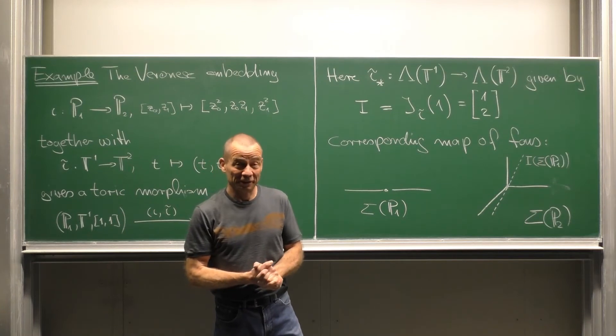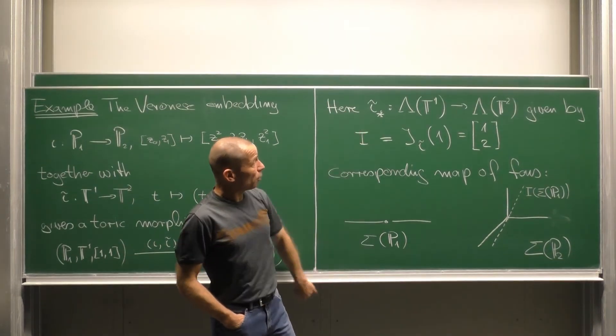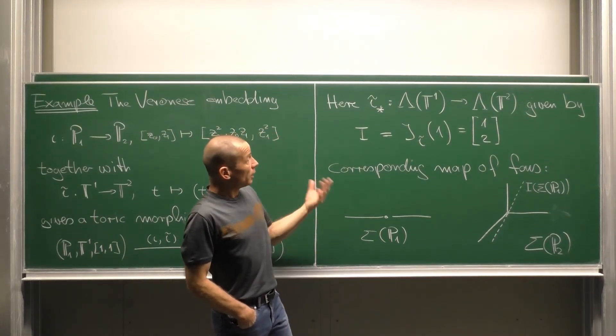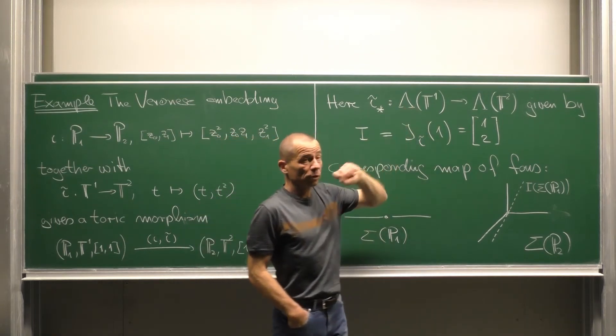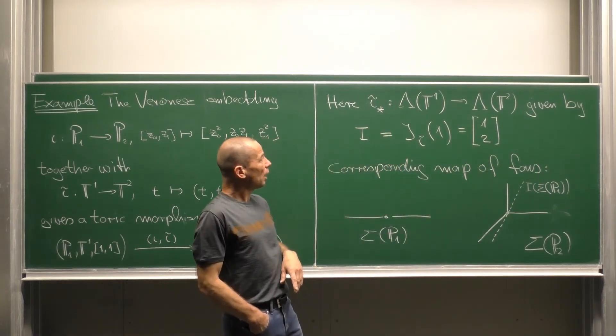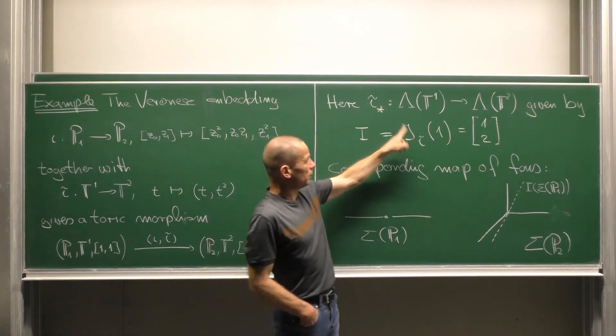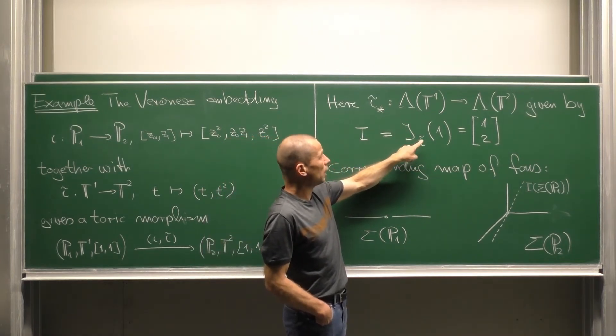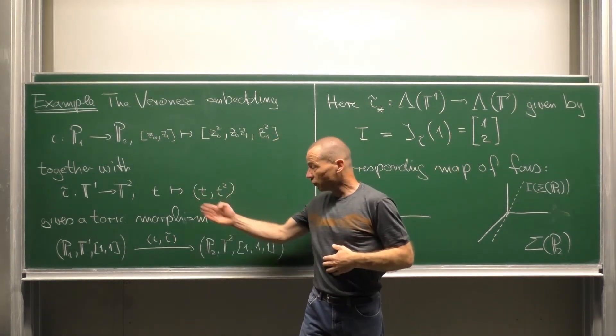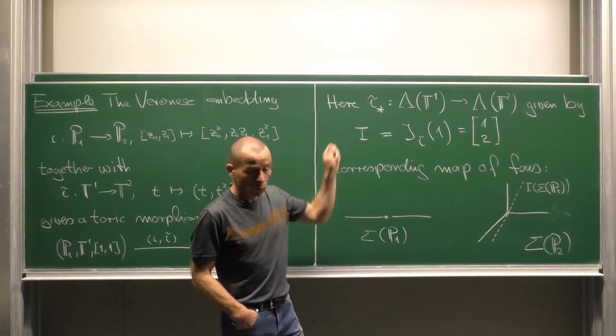Let us look at it in the setting of fans. The push-forward map of one-parameter subgroups in this case, identifying again this lattice of one-parameter subgroups with Z and that one with Z². We obtain the push-forward as I equals the Jacobian of tilde I in the point 1. And this is just obtained by differentiating this. And we get the matrix with one column, (1,2).